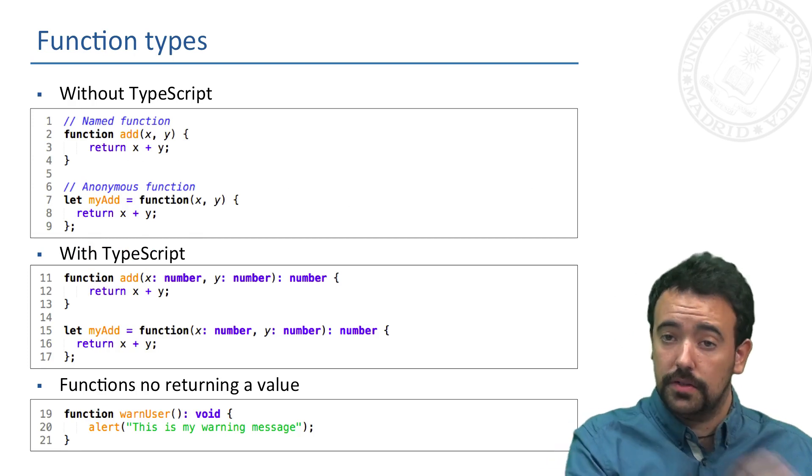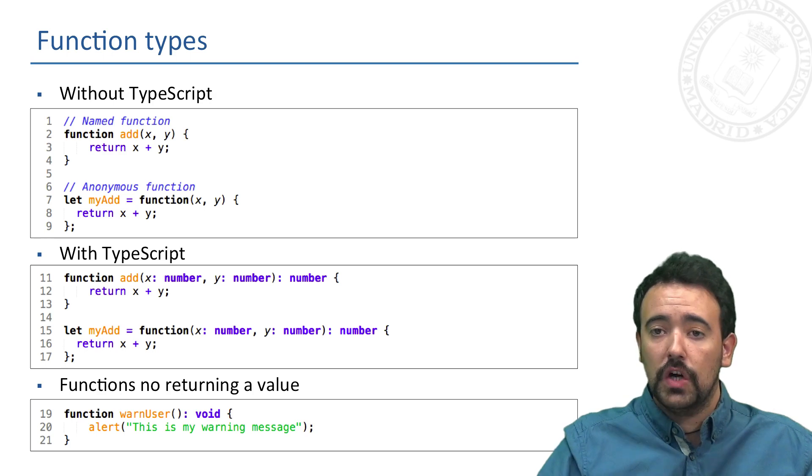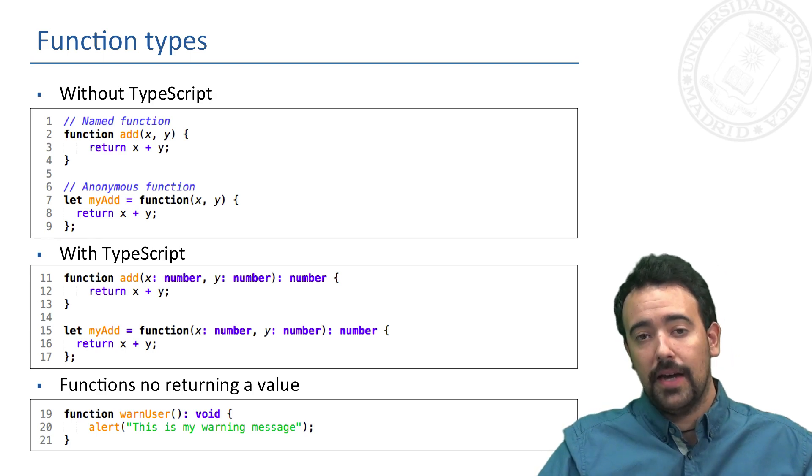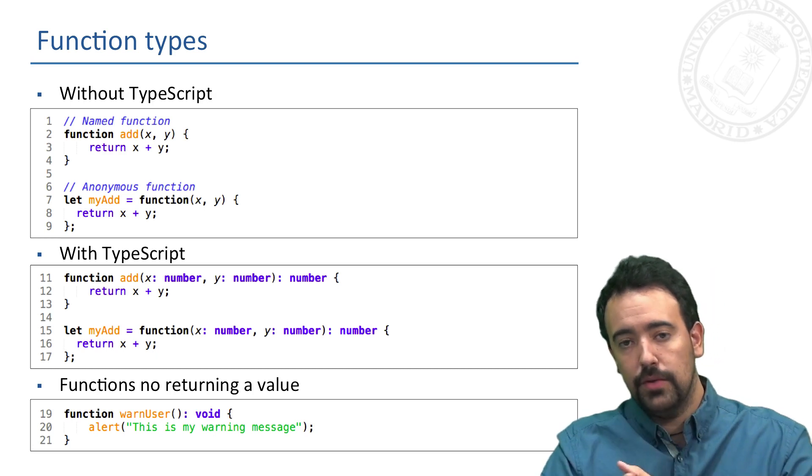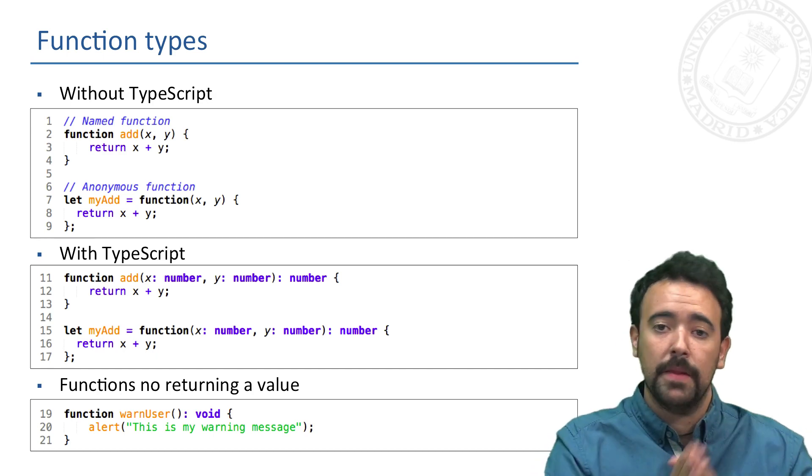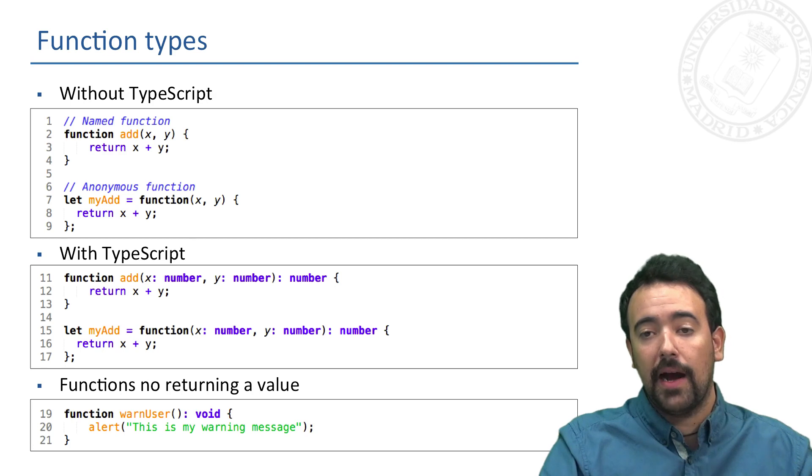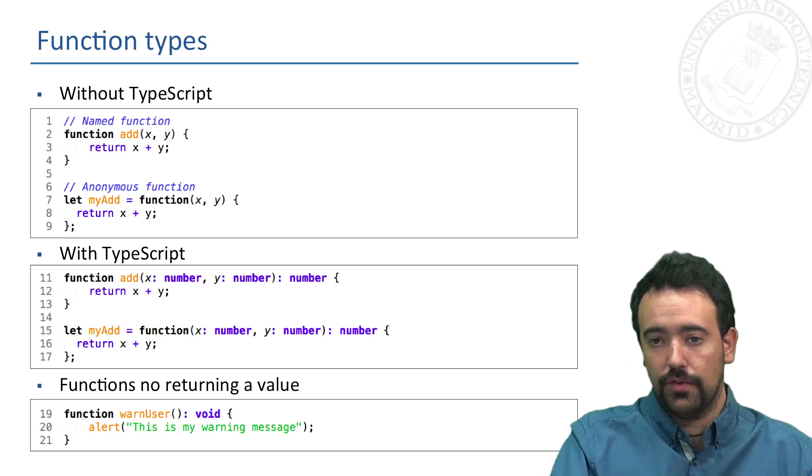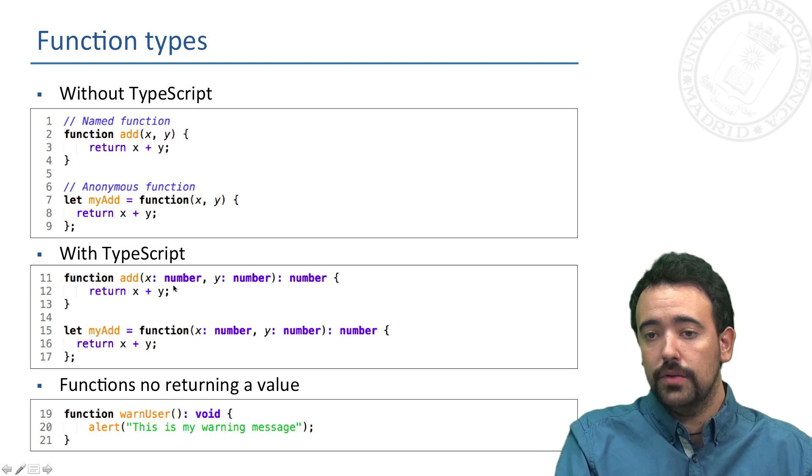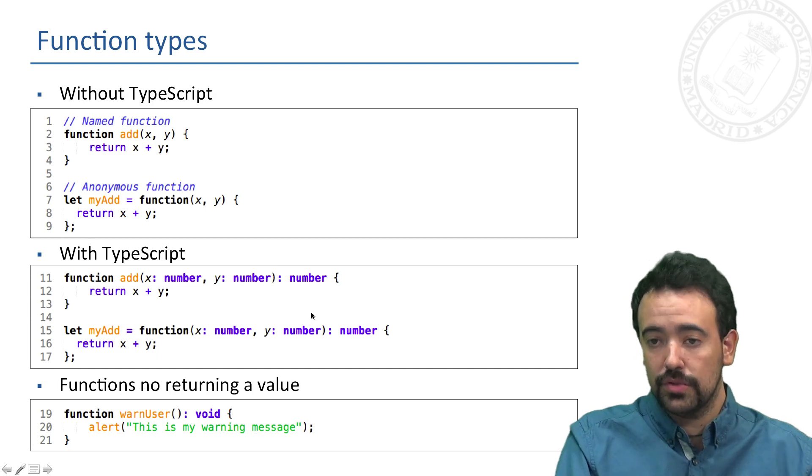Finally, talking about not variables but functions, of course using TypeScript we can add typing to our functions for both the values that we introduce as parameters and also for the value that a function returns when executed. For instance, here we can see how we have included in this function that performs an adding operation that the first value is of type number, the second value also of number, and the value that the function returns is also a number.